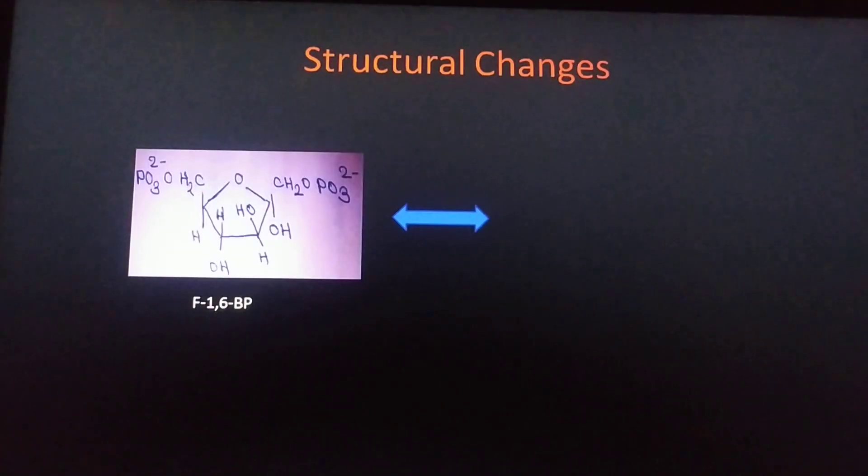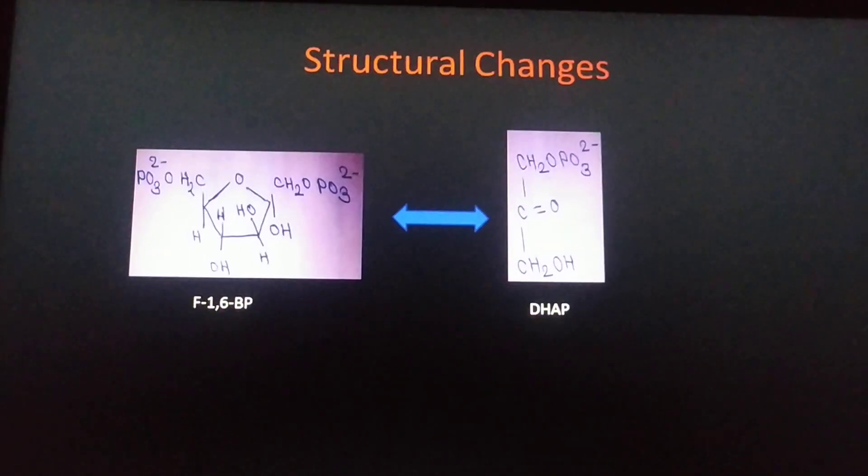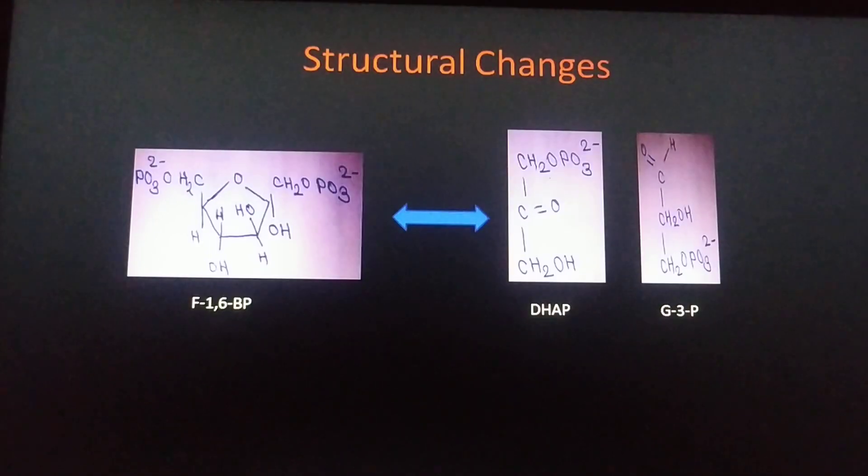Now we will see what are the structural changes taking place in this reaction. This is the structure of fructose-1,6-bisphosphate. Now this fructose-1,6-bisphosphate cleaves into two structures: one is DHAP, that is dihydroxyacetone phosphate, and second is glyceraldehyde-3-phosphate. So how are these two products formed?